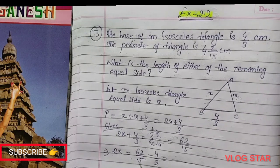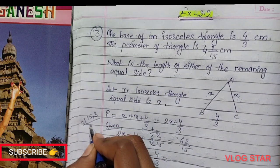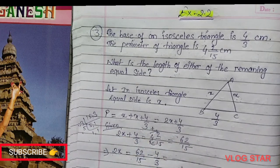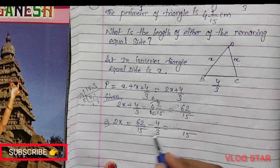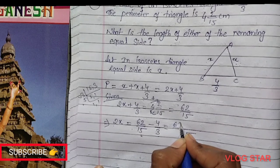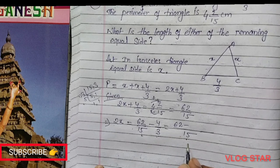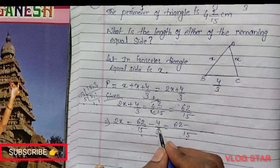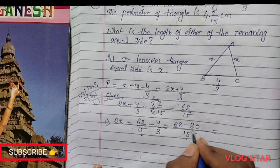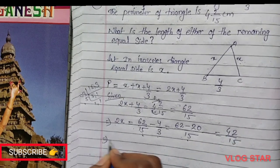Now LCM of 15 and 3 is 15. In the table of 15, we get 1 times 15, so I multiply 1 with 62, which is 62. In the table of 15, 5 times 3 is 15, so 5 times 4 is 20. I can write here 62 minus 20 is 42 by 15.